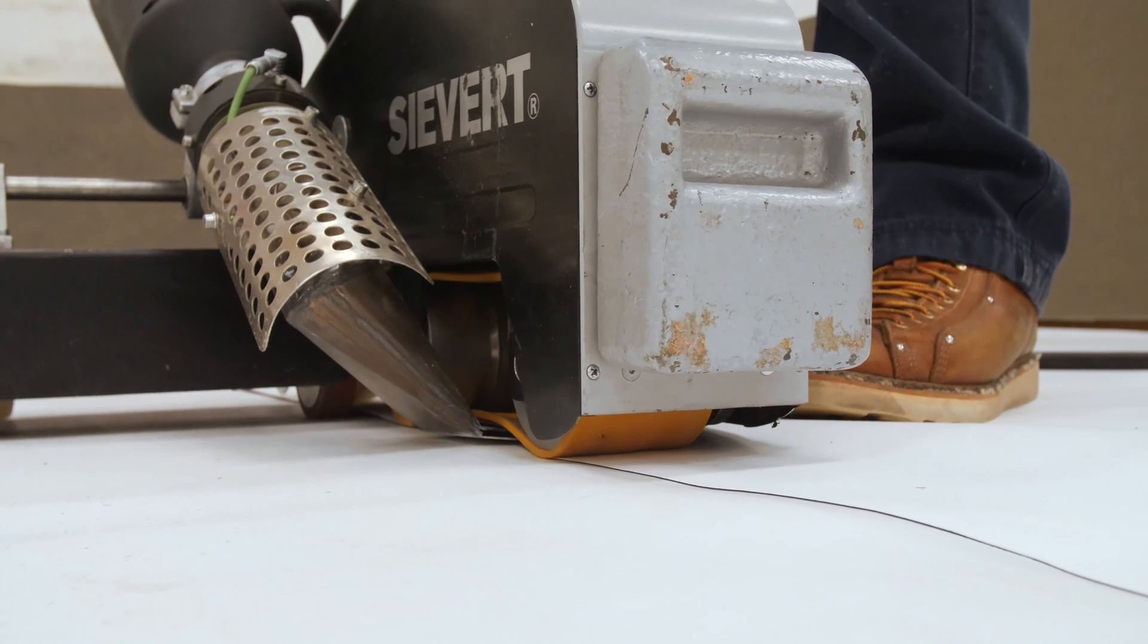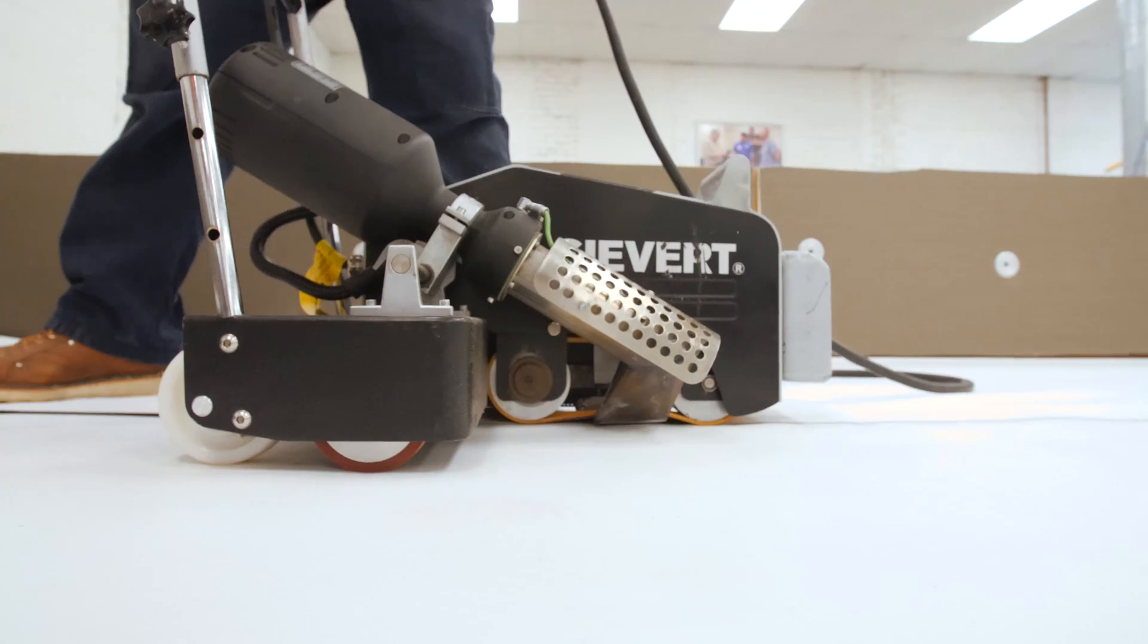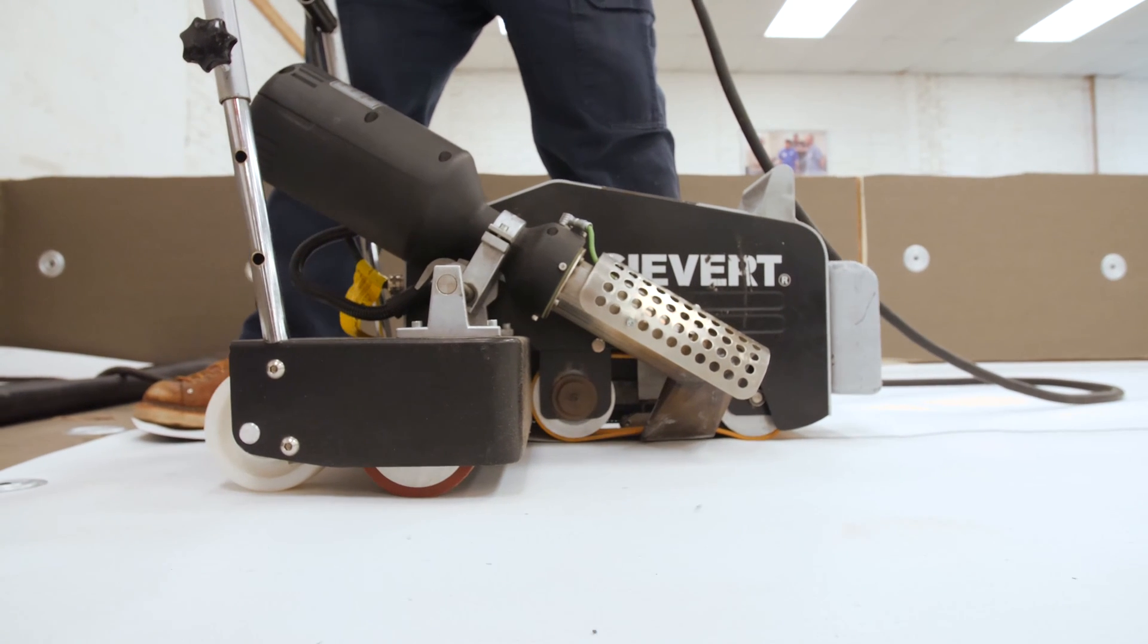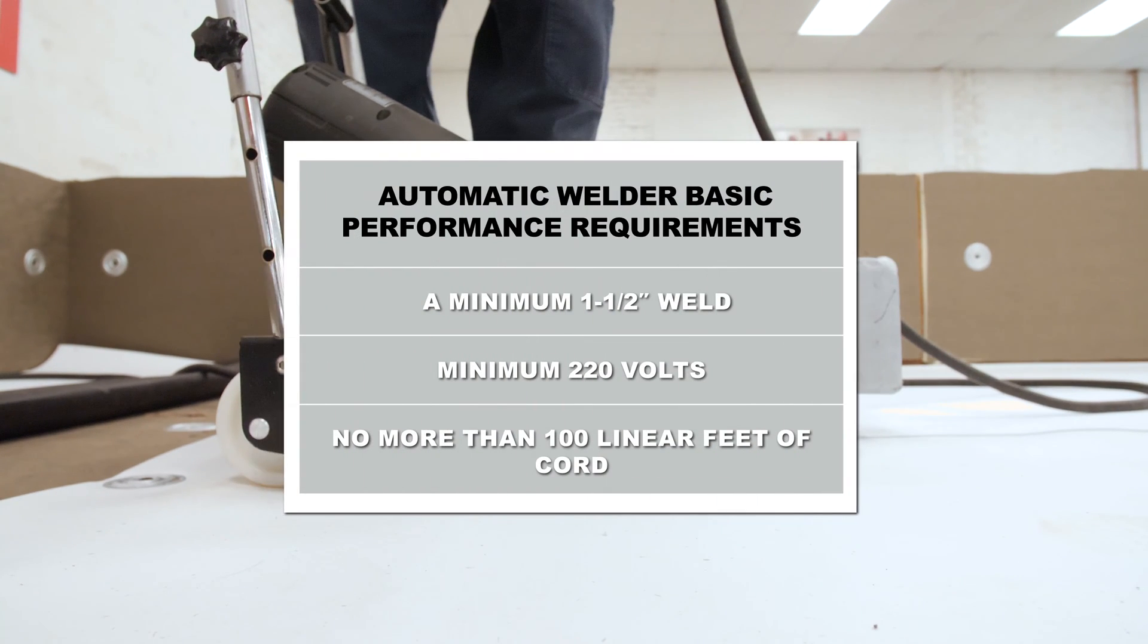Mulehide requires the use of an automatic welder on all projects requiring a system warranty. There are many different manufacturers of automatic welders. Mulehide does not promote one brand over the other, but we do have basic performance requirements: a minimum 1.5 inch weld, minimum 220 volts, and no more than 100 linear feet of cord.